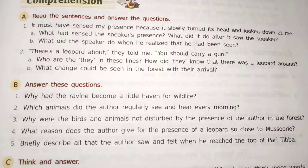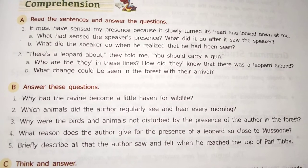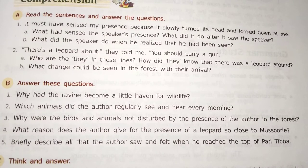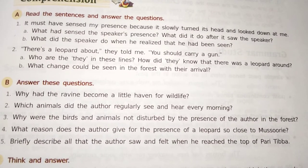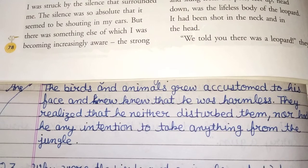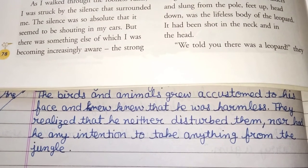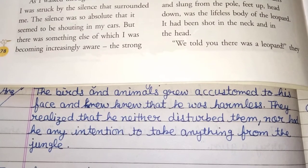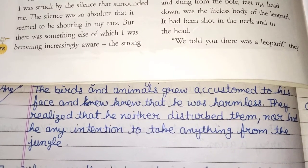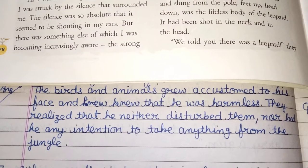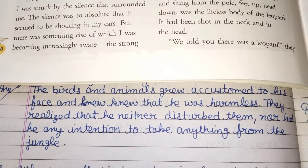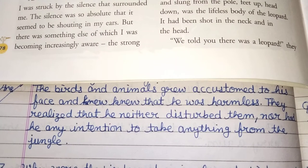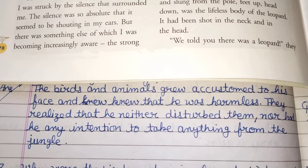Third question: Why were the birds and animals not disturbed by the presence of the author in the forest? Answer: The birds and animals grew accustomed to his face and knew he was harmless. They realized he neither disturbed them nor had any intentions to take anything from the jungle.